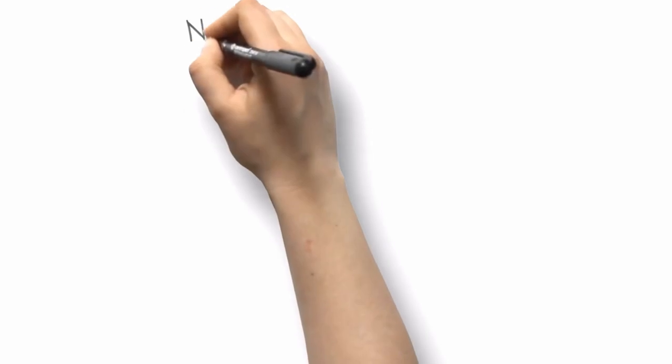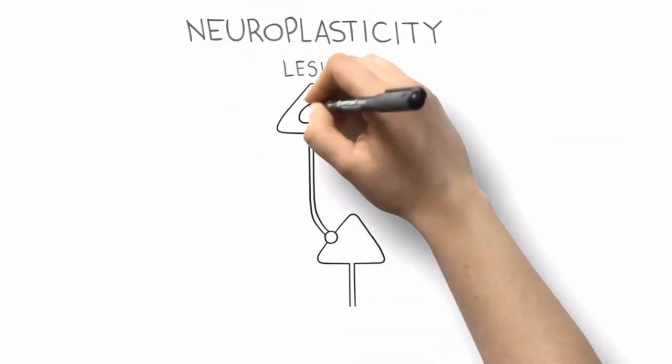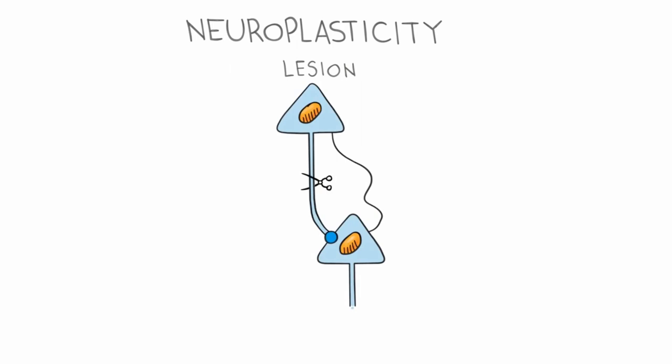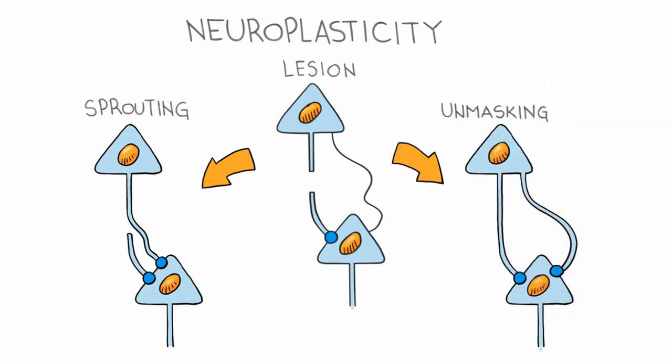This phenomenon called neuroplasticity allows existing neural pathways that are inactive or used for other purposes to take over and carry out functions lost due to injury. Researchers also claim that our brain is capable of changing even years after a stroke.